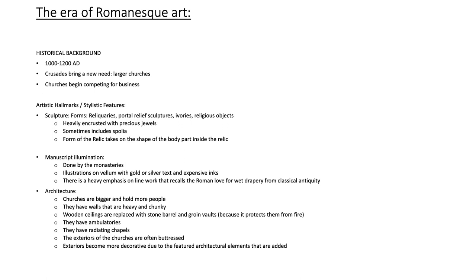Spolia specifically involves taking something like a Roman head and making it new by putting gold on it and making it a relic. The form of the relic takes on the shape of the body part inside the relic. For manuscript illumination, there is a heavy emphasis on line work that recalls the Roman love for wet drapery in classical antiquity. Those are the basics — keep adding to this list to get a solid picture of what Romanesque art is.